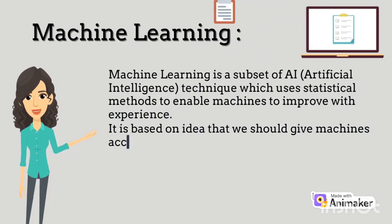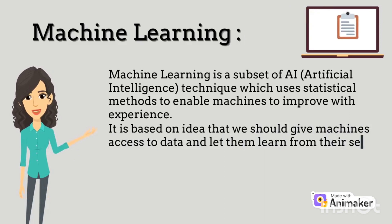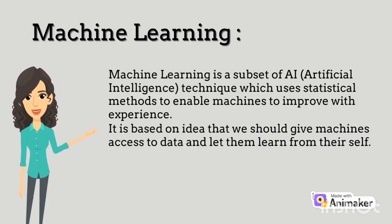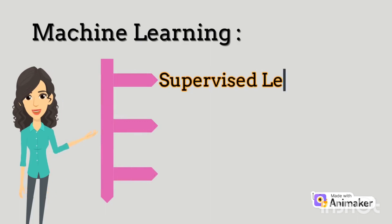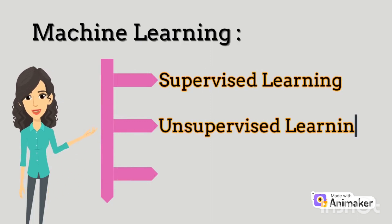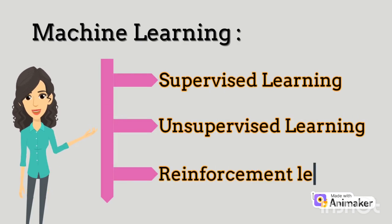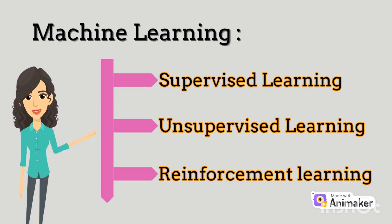Machine learning is based on the idea that we should give machines access to data and then let them learn from themselves. There are three basic categories of machine learning: supervised learning, unsupervised learning, and reinforcement learning. We will learn more about the types of machine learning in our upcoming videos.